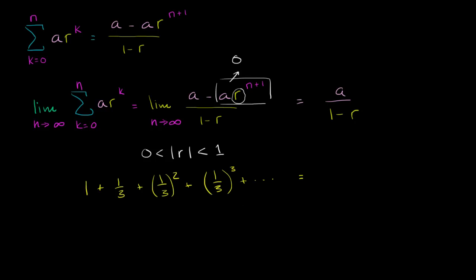It's going to be my first term, 1 over 1 minus my common ratio. 1 minus, my common ratio in this case is 1 third. 1 minus 1 third, which is the same thing as 1 over 2 thirds, which is equal to 3 halves, or you could view it as 1 and 1 half. That's a mildly amazing thing.